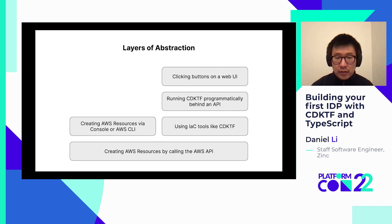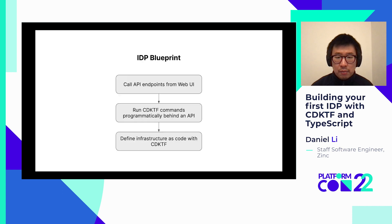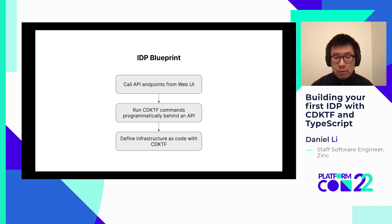Just as platform-as-a-service platforms like Heroku made deploying applications easier — just push your changes and Heroku takes care of the servers, networking, and deployments — an IDP is similar to an internal platform-as-a-service. So in summary, the blueprint to creating an IDP from scratch is to first define the infrastructure for each environment as code, then wrap the IAC tool with an API, and then wrap the API with either a web-based or command-line interface. This will give you a rudimentary IDP.